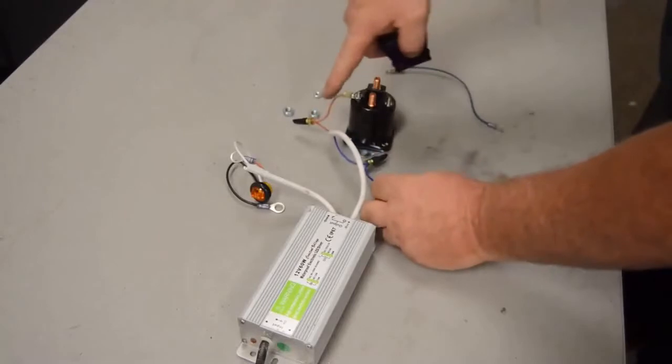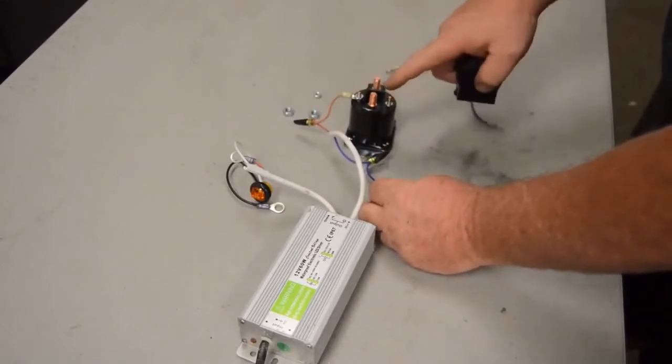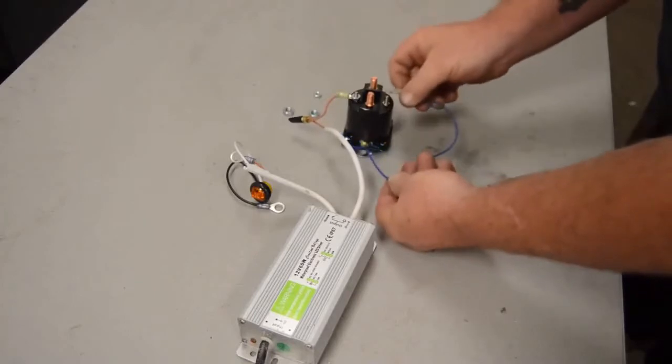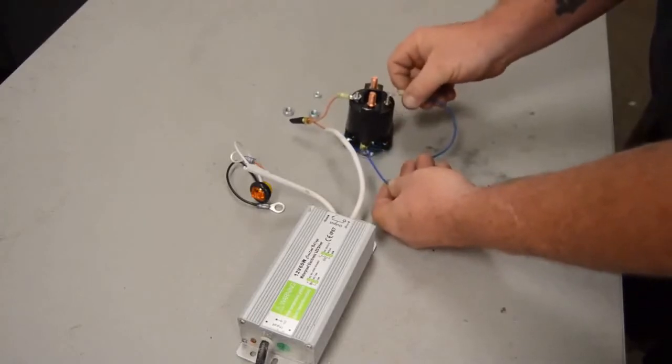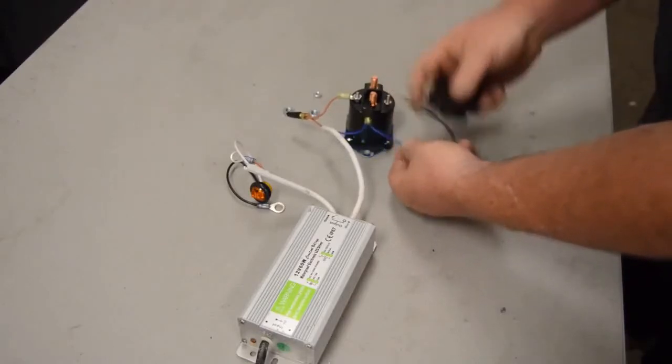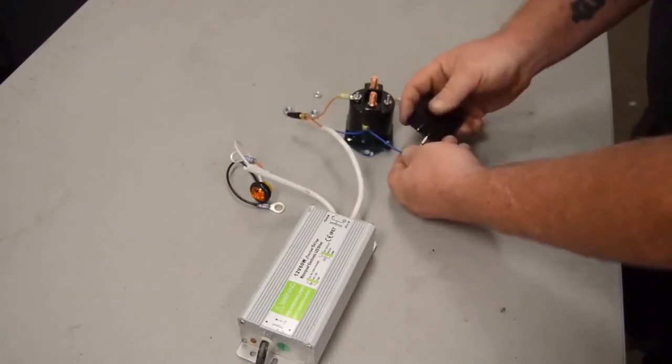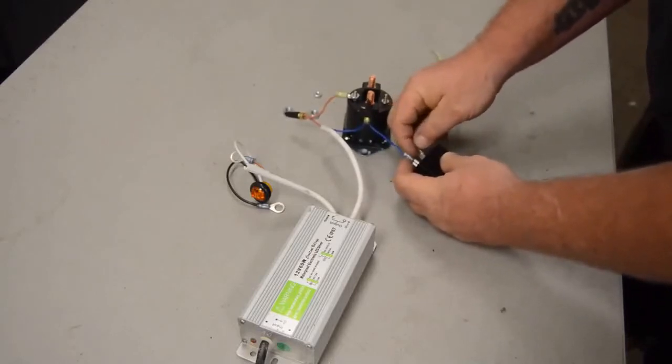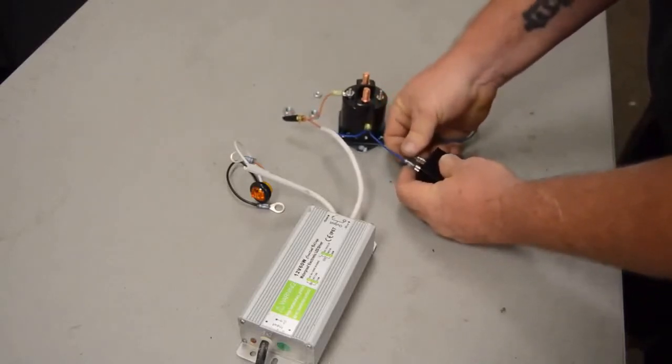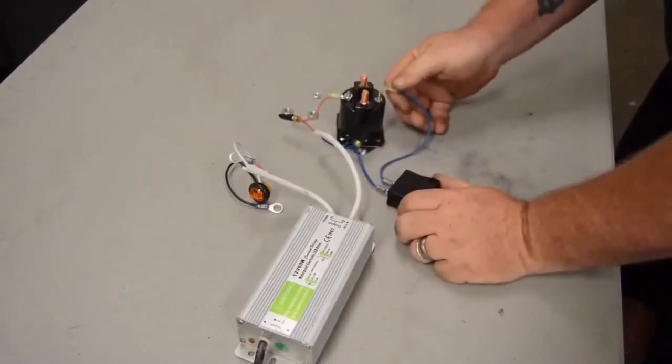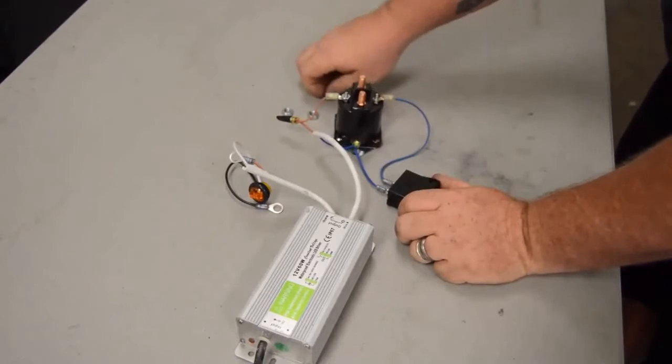So our positive is in and now we need to make connection with our negative. But rather than just go straight negative which would turn it on, we're going to put a switch in between there. Of course we all know what a switch does, you use one every day, you turn the switch on at your house to turn the lights on. See right now it's touching but the switch is off.